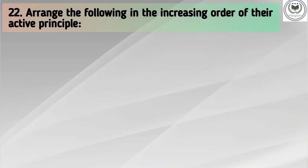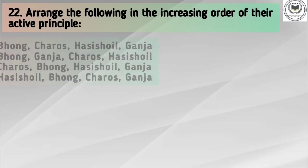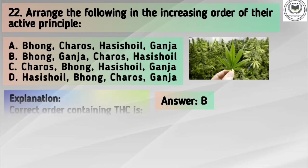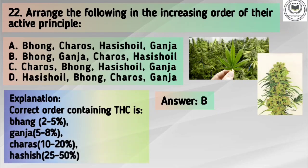Question number 22. Arrange the following in the increasing order of their active principle. Options: A. Bhang, Charas, Hashish oil, Ganja. B. Bhang, Ganja, Charas, Hashish oil. C. Charas, Bhang, Hashish oil, Ganja. D. Hashish oil, Bhang, Charas, Ganja. The correct answer is option B: Bhang, Ganja, Charas, Hashish oil. The active principle here is THC (tetrahydrocannabinol).